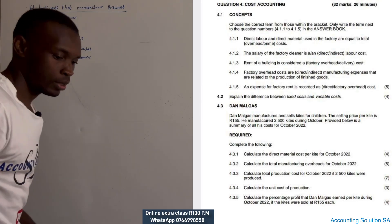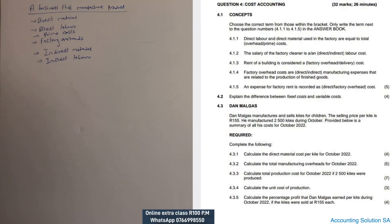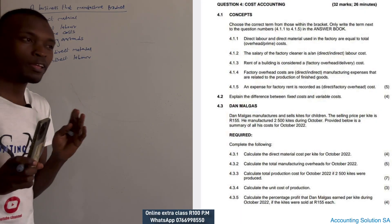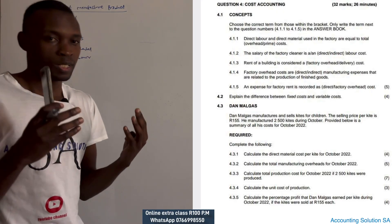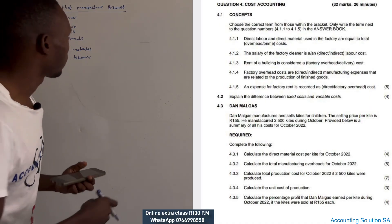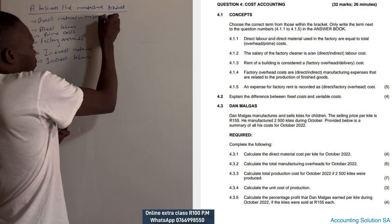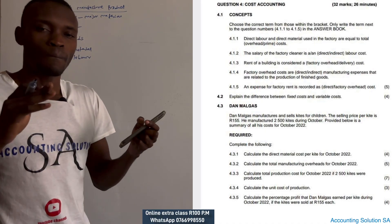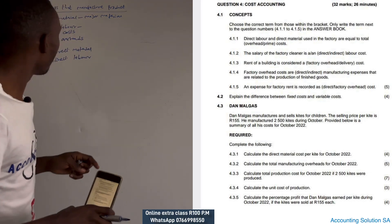Direct material is the material that we use to produce a product. If we are talking about tables and chairs, we are talking about the wood that we use to produce them — we call it direct material. These are the major materials to produce goods. Direct labor refers to those who produce the product — we call them direct labor.